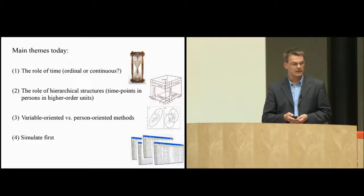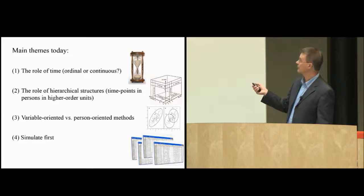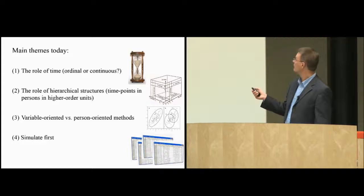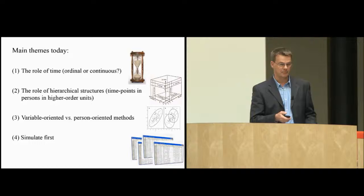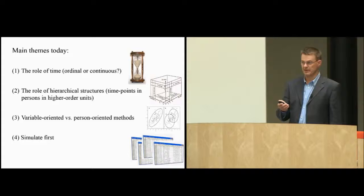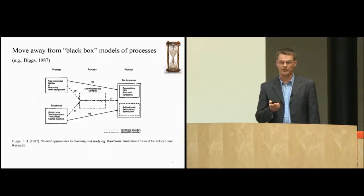Thirdly, we have the distinction between variable and person-oriented methods. I illustrate that with the distinction between a factor and clusters from Bauer and Curran. We know that the same correlational data, if we analyze it as correlational structure, we can extract one factor, but if we analyze the mean structure, we can have the number of factors plus one.